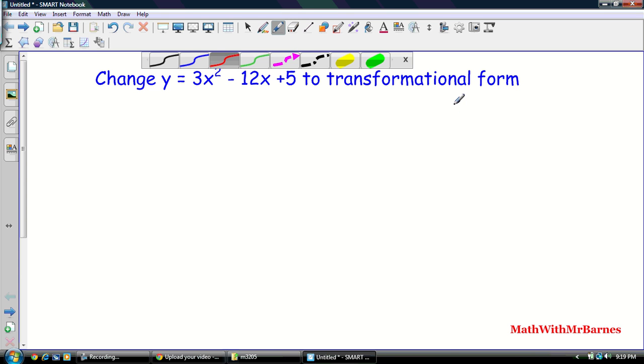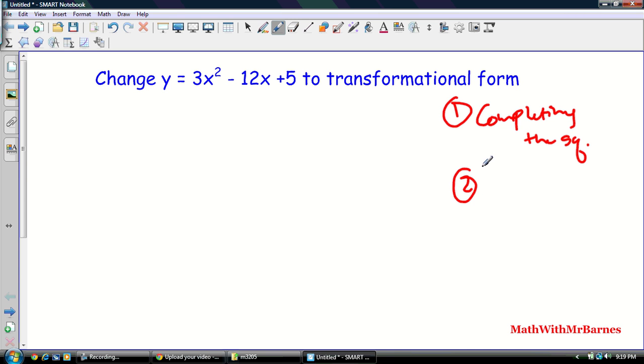Basically, we did it one of two ways. The first one being completing the square, and the second way we did it, we called it the alternate method, which was a fancy way of saying we just found the HT, VT, VS, and REF. Okay, so that's basically what we did with this guy.